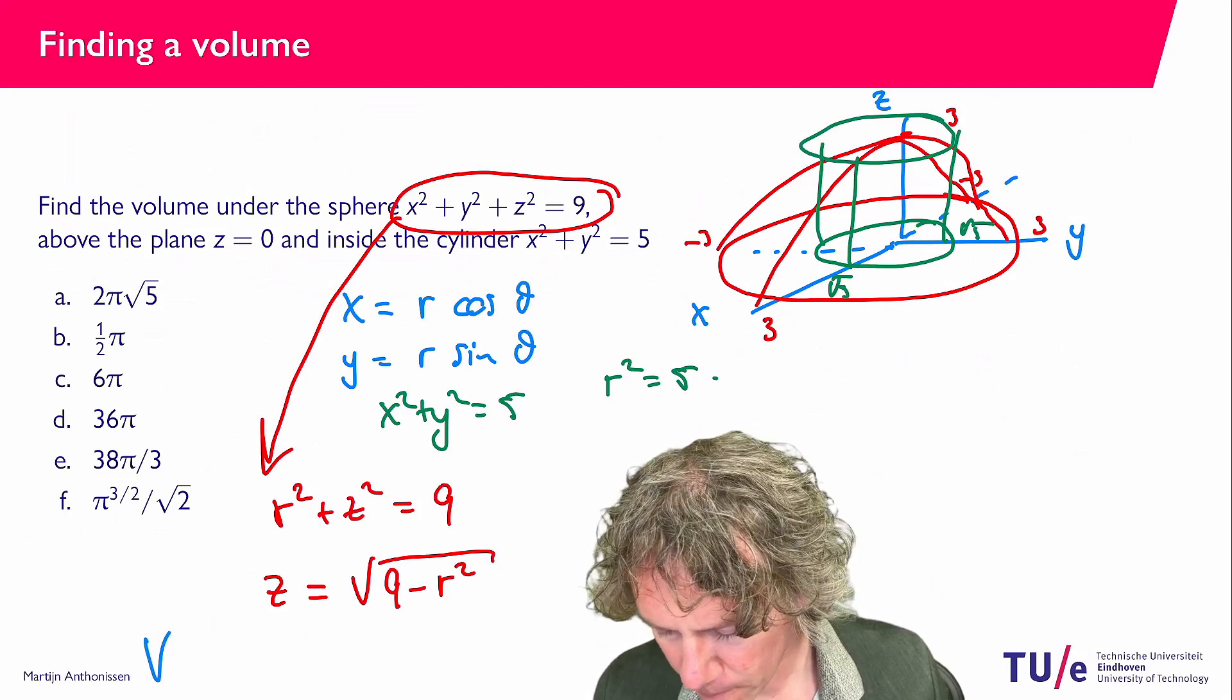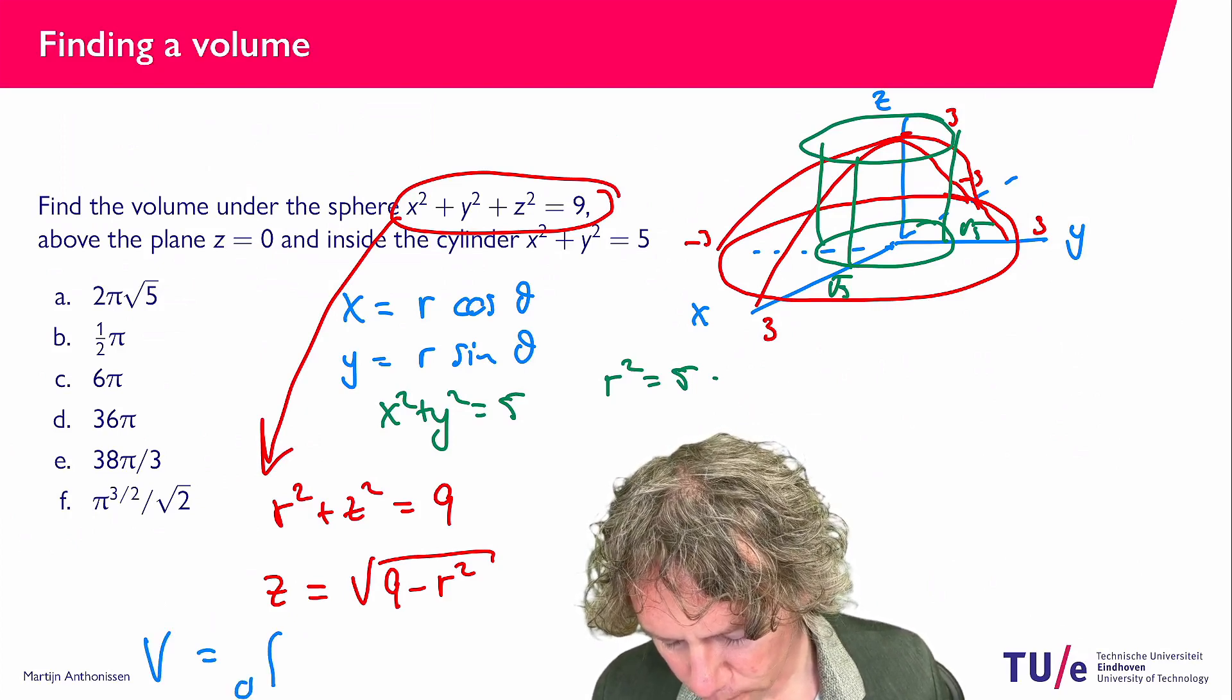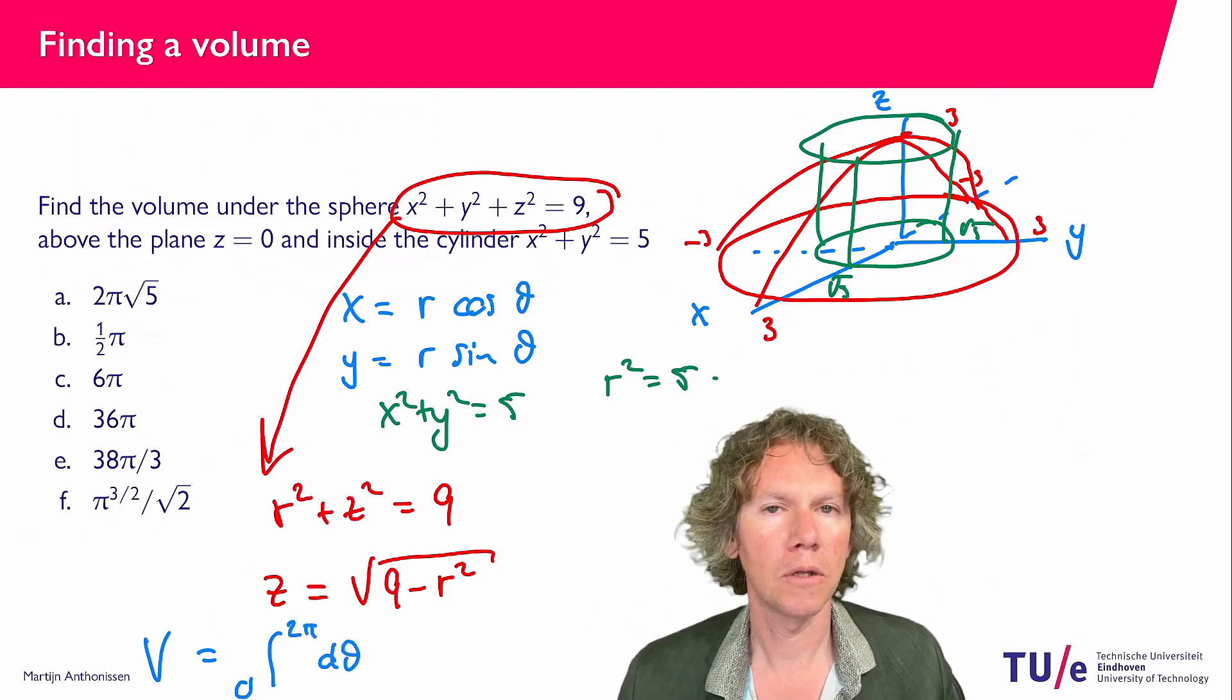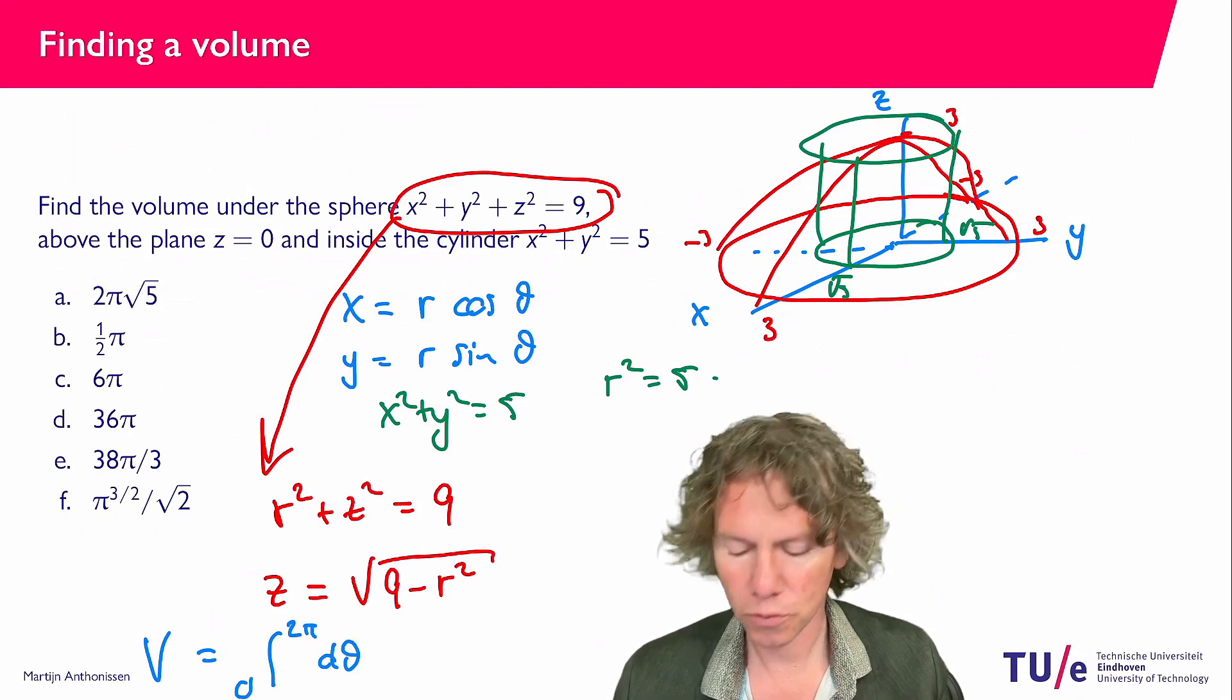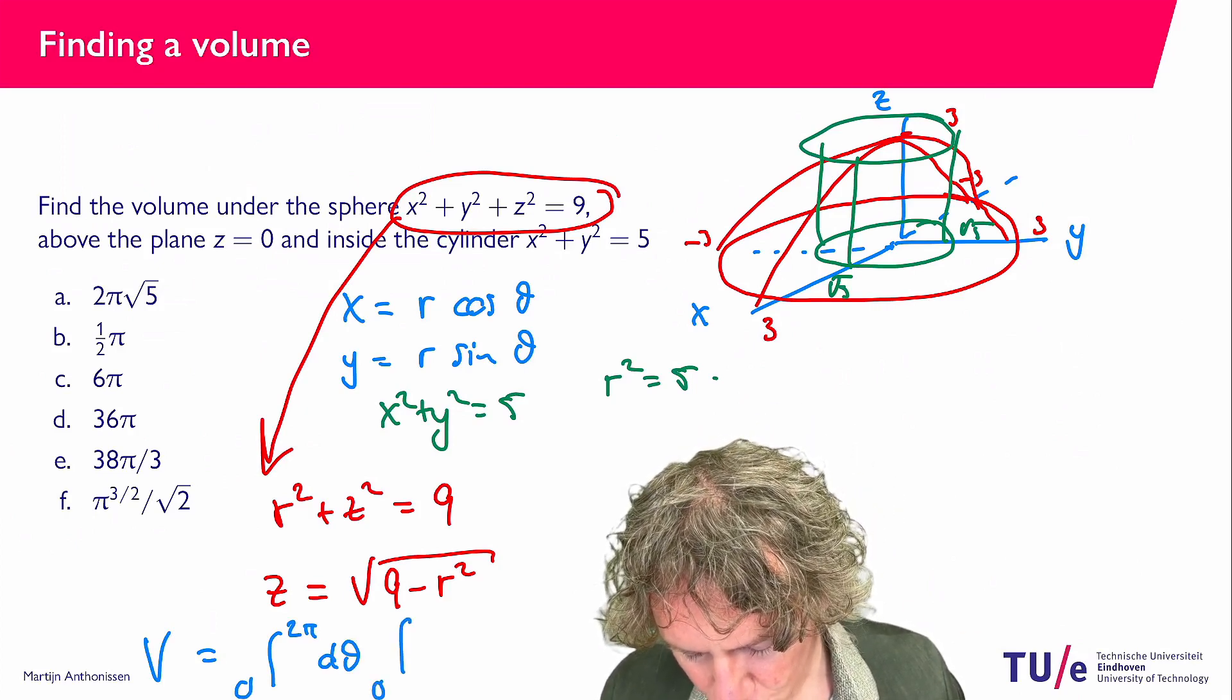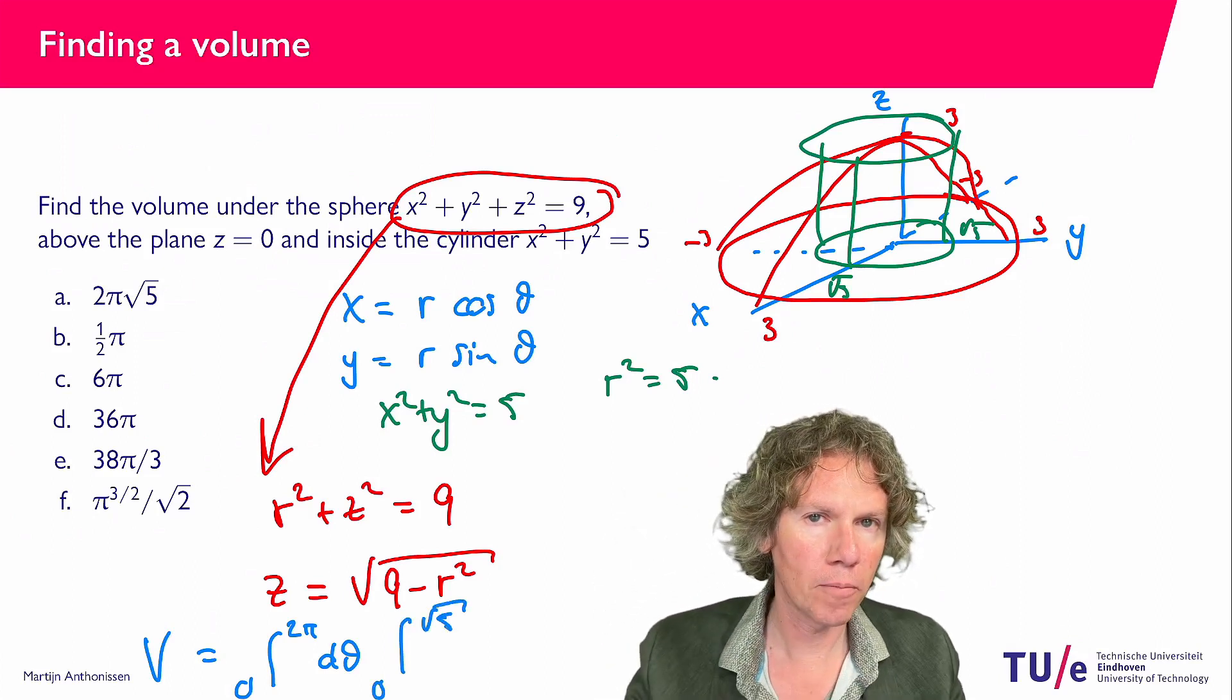The volume that we need to find is now the integral. And then in polar coordinates from 0 to 2 pi d theta because we need the full circle. It's rotation symmetric. And then we integrate from 0 to the square root of 5. So that is the green cylinder. That's in the ground plane.